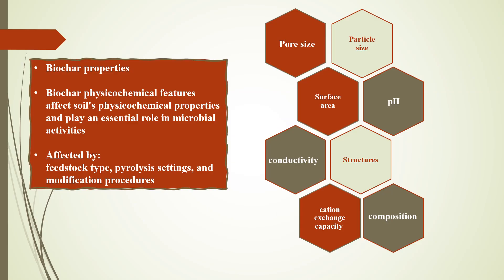Biochar's physical and chemical features, such as surface area, particle size, pore size, structures, composition, conductivity, pH, and cation exchange capacities, are affected by the feedstock type, pyrolysis settings, and modification procedures. These features are the main factors that affect soil physical and chemical properties, and also play an important role in microbial activities.